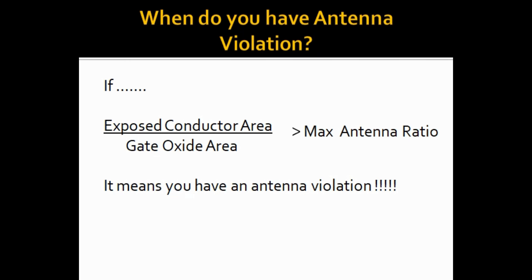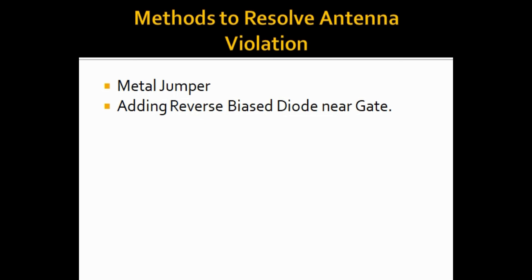In your rule deck, a value called max antenna ratio is defined. If the exposed conductor area divided by gate oxide area is greater than that antenna ratio, you have an antenna violation. It makes sense: more conductor area exposed to plasma means more charge accumulated, more charge discharging through gate oxide, and more damage. Similarly, a smaller gate oxide area means the charge damages it more severely.